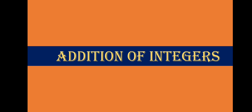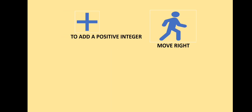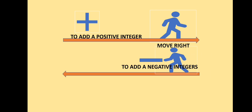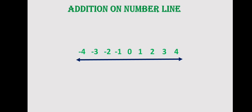Now let's learn operations on integers, starting with addition. When adding on a number line, we move right to add a positive integer. But when adding a negative integer, we must move back, because positive and negative are opposites. The difference between two consecutive integers on the number line is always one.